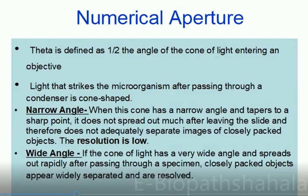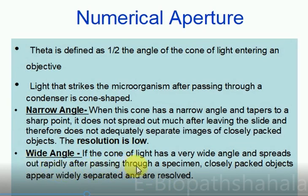The half-angle of the cone of light entering an objective is theta. A narrower angle gives low resolution. A wide angle gives more resolution, because the light spreads out rapidly after passing through a specimen, meaning closely packed objects appear widely separated and are therefore better resolved. So the wider the angle theta, the more the resolving power.